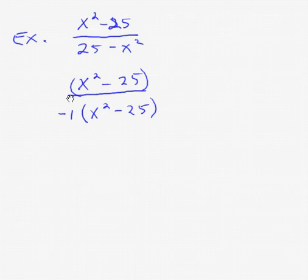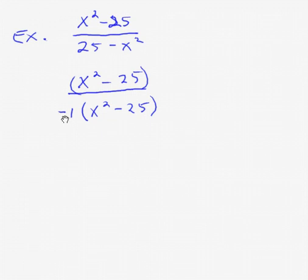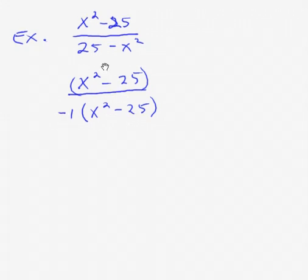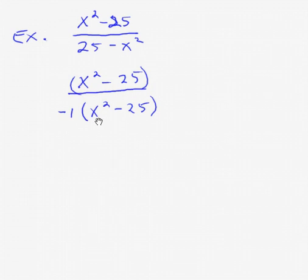If I factor out a negative 1, 25 divided by negative 1 is negative 25. And negative x squared divided by negative 1 is positive x squared. And now what we have is x squared minus 25 divided by x squared minus 25.